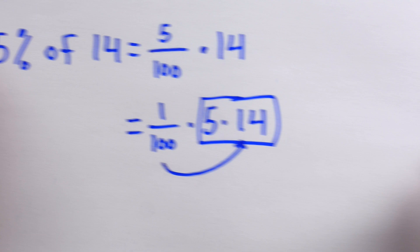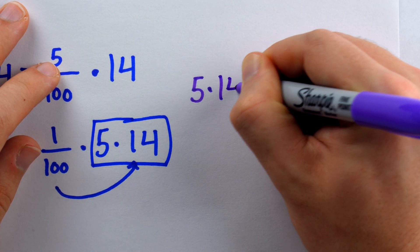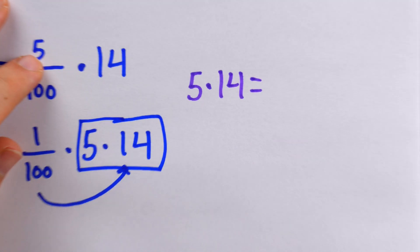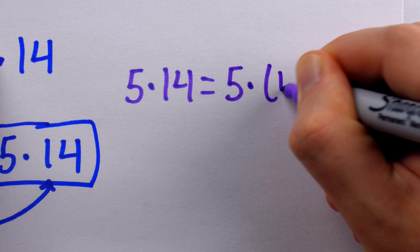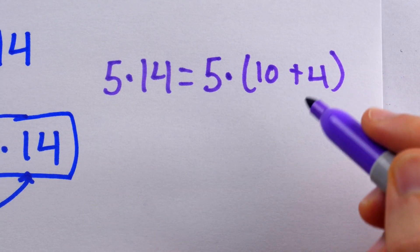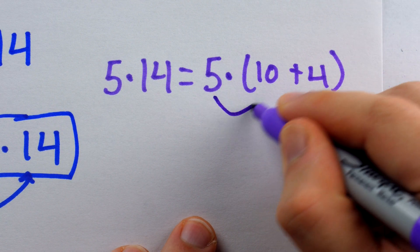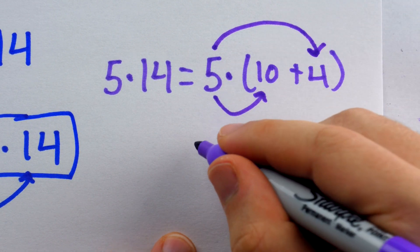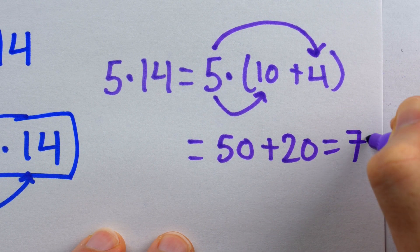And if 5 times 14 is not super easy for you to do, then there are still more tricks your math teacher taught you that you ignored. Like the distributive property. 5 times 14, with the distributive property, we know that we can write this as 5 times 10 plus 4, and then just distribute the 5 through these parentheses. You might not know 5 times 14 offhand, but I'm sure you know 5 times 10, and I'm sure you know 5 times 4. Clearly, this is just 50 plus 20, and so the product is 70.